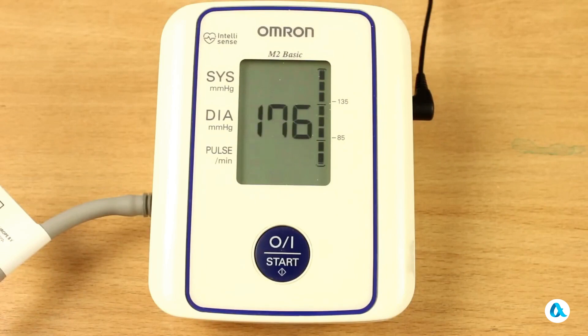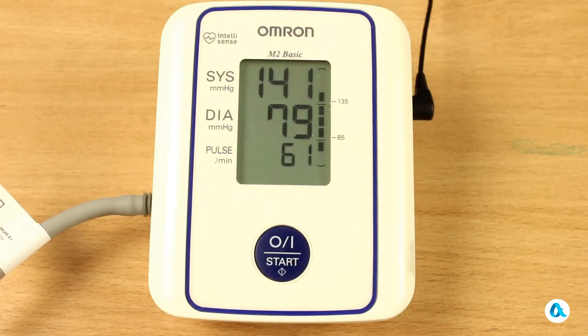And now it reaches 176 millimeters of mercury. Now the air begins to release from the cuff. All of this happens very gradually. Let's wait a little longer. And here are the readings from the blood pressure monitor: 141 over 79 millimeters of mercury. What do these two measurements mean?